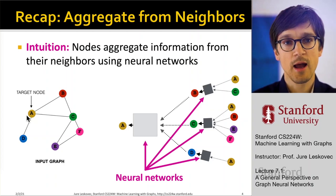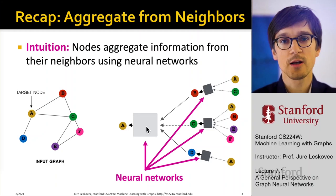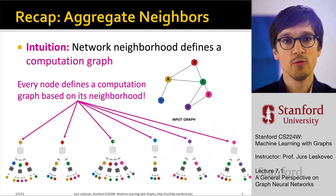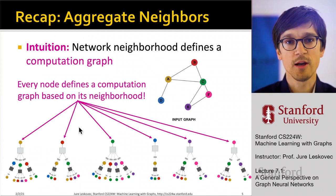And then of course, the goal will be to learn the transformations in this neural network that will be parametrized, and this way our approach is going to work. So the intuition is that network neighborhood defines a computation graph, and that every node defines a computation graph based on its network neighborhood. So every node in the graph essentially can get its own neural network architecture, because these are now different kind of neural networks. They have different shapes.